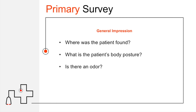Next we move into our primary survey, which is always going to be focusing on immediate life threats. You want to form your general impression — where is the patient found? Are they in the bathroom, in bed, or on the floor? What is the patient's body posture — supine, curled over holding their abdomen in the fetal position, or vomiting while sitting on a toilet? Also note any odor: an upper GI bleed may produce foul-smelling stool. After about two to five minutes your nose will tire of the signal, so note pungent smells early on.